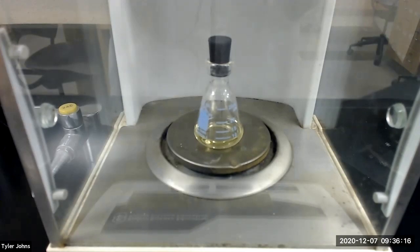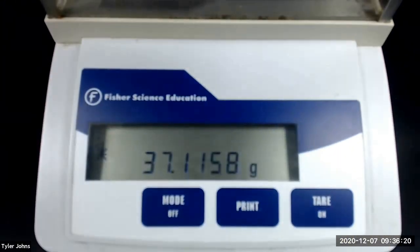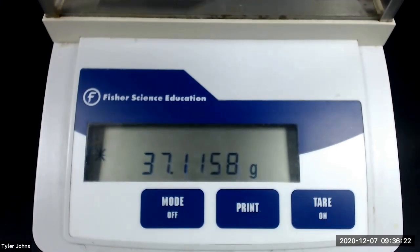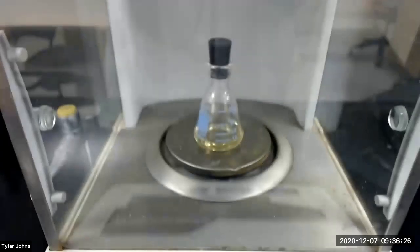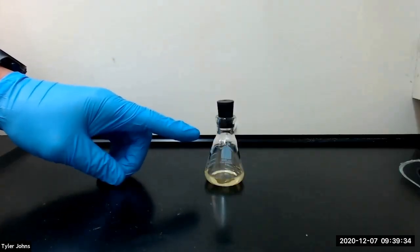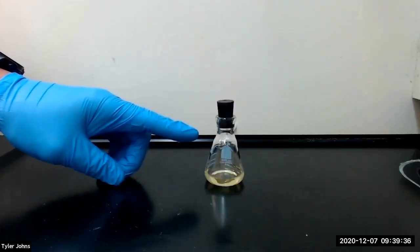The mass of the flask, the solution, and the benzaldehyde is 37.1158 grams. We will now let the stoppered flask stand in a dark place for two days.